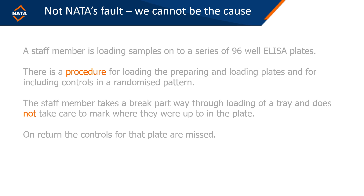Here is a real example: a staff member is loading samples into a 96-well ELISA plate. The procedure requires loading and preparing the plates in a specific way to achieve a randomised pattern including the controls, which is part of the built-in quality control. The staff member takes a break while loading the tray and does not mark where they were up to on the plate. When they return, they make an error and miss the controls, causing the entire plate to fail later on.